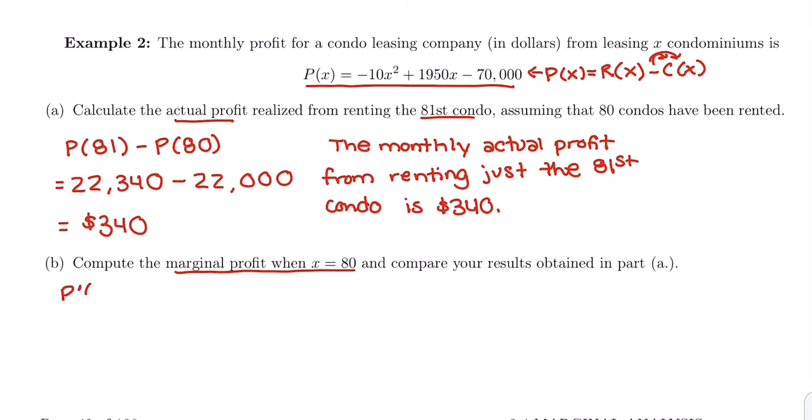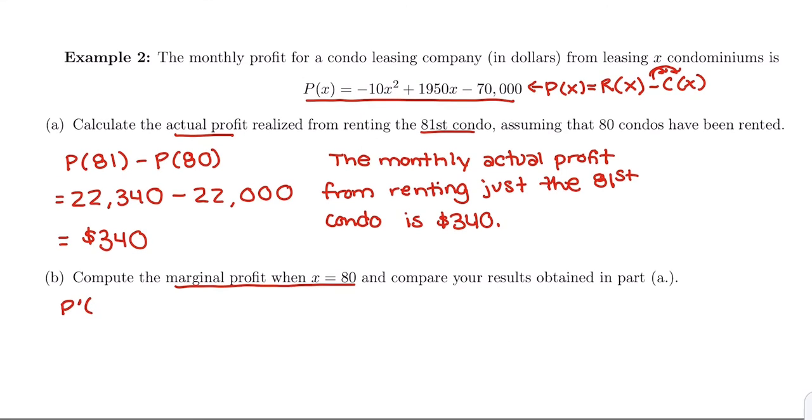Marginal means take the derivative. So we're going to do P'(x). We're going to take the derivative of the profit function. I'm going to bring down the power: negative 10 times 2 gives me negative 20x. Derivative of 1950x is 1950, and the derivative of negative 70,000 is 0.